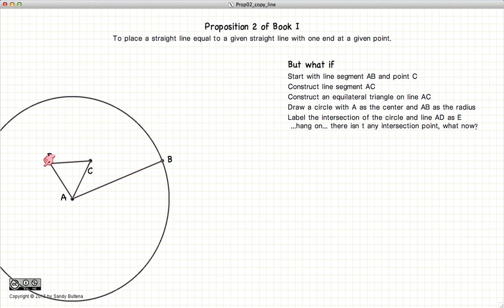What we do is we simply extend the line DA until it crosses the circle. And we label the intersection of the line DA and the circle as point E.